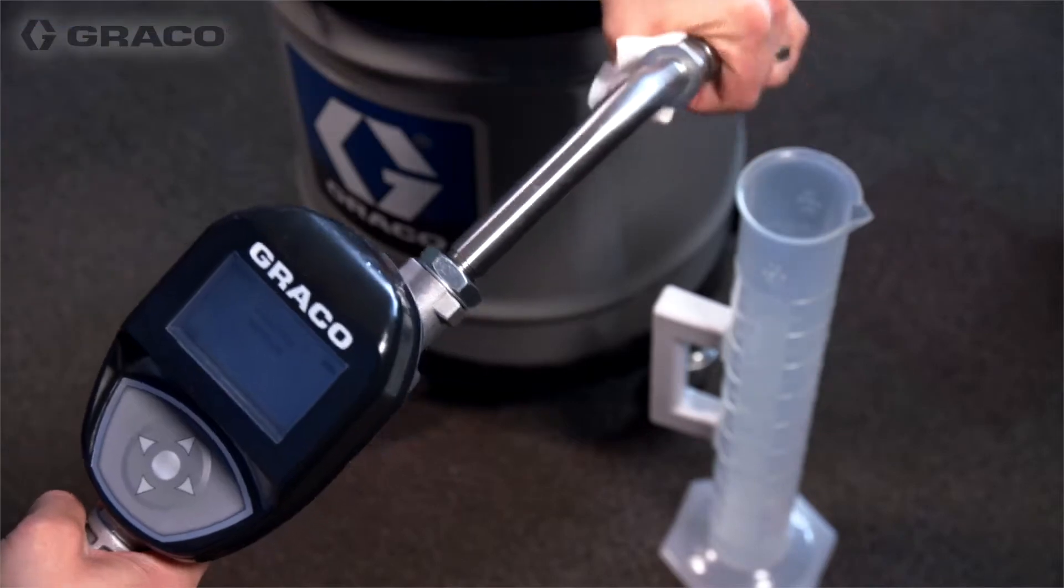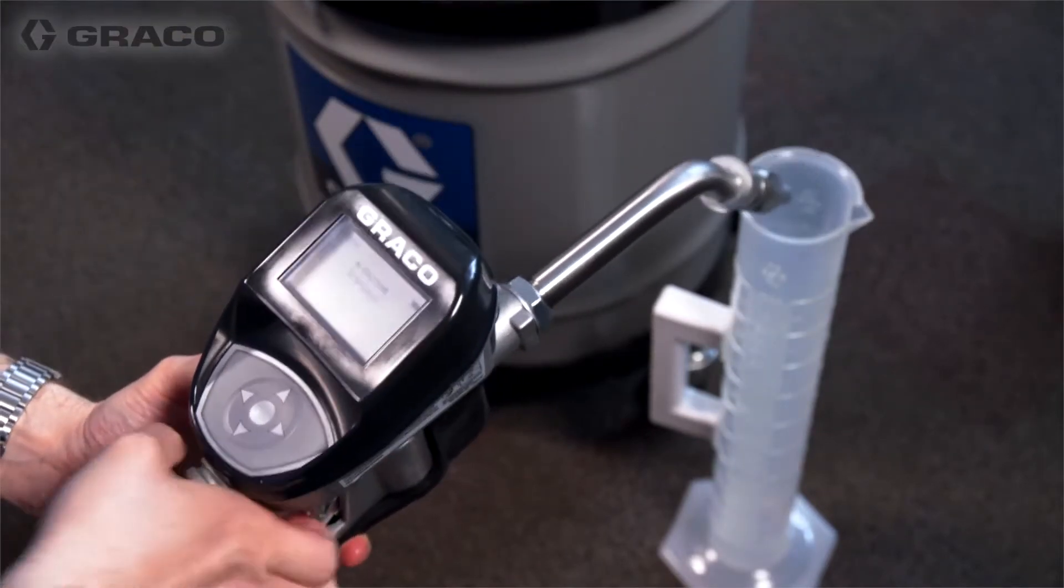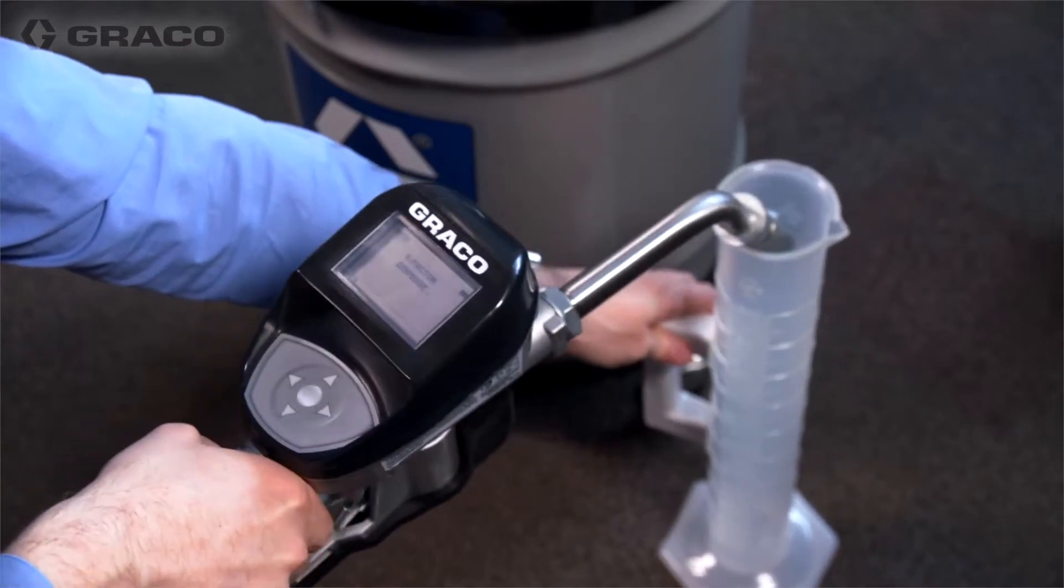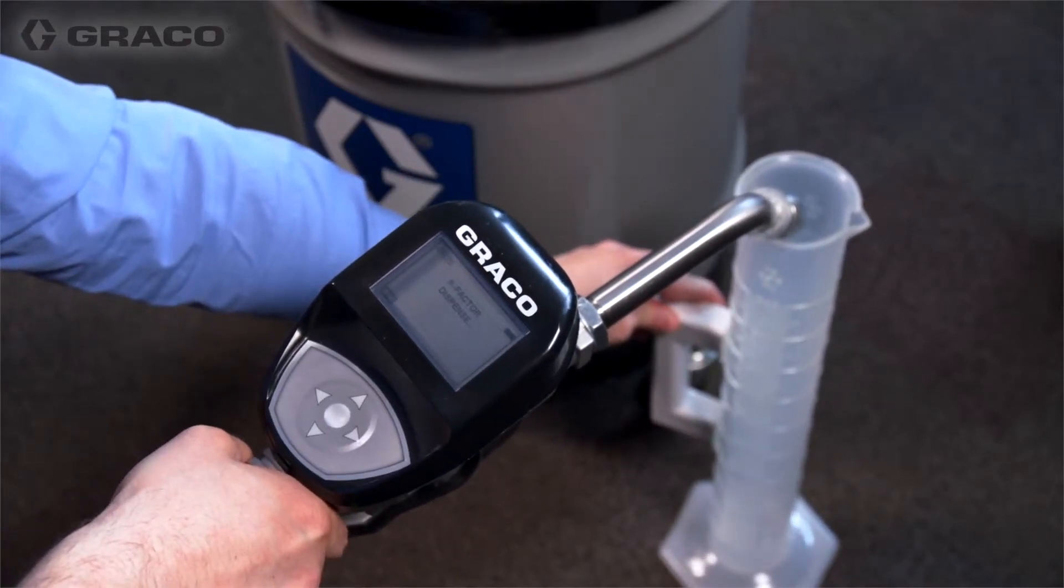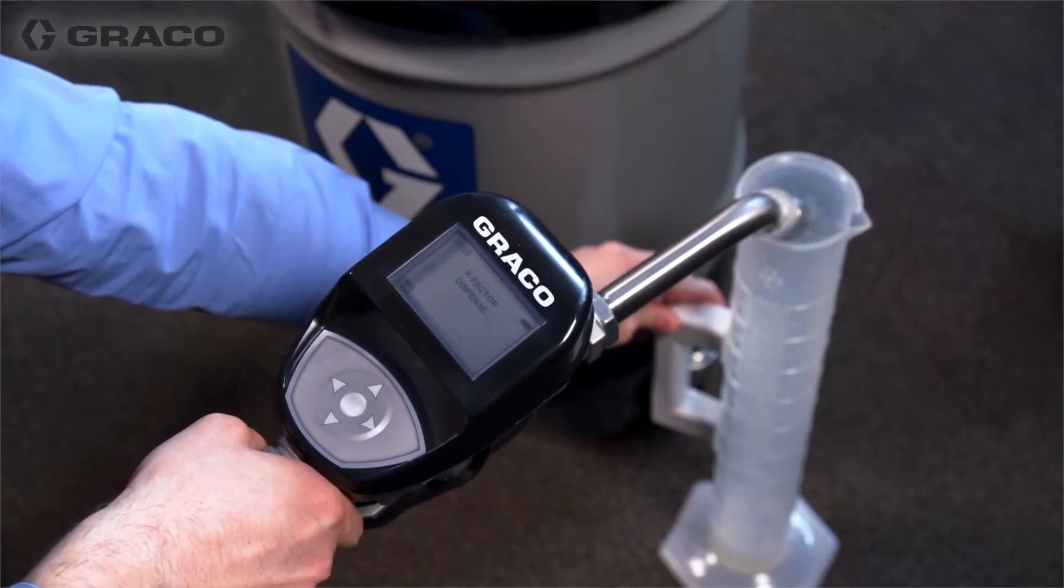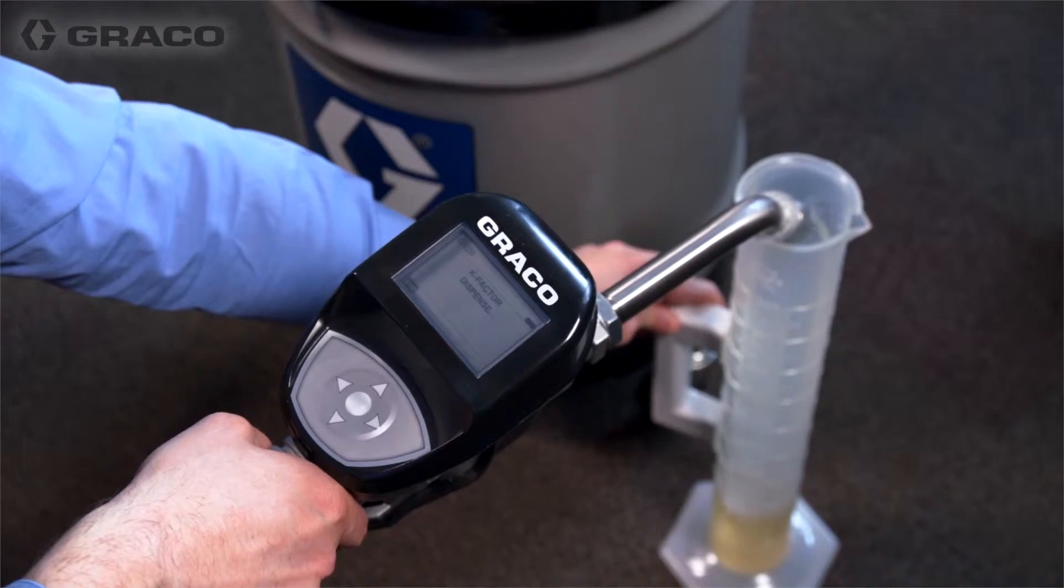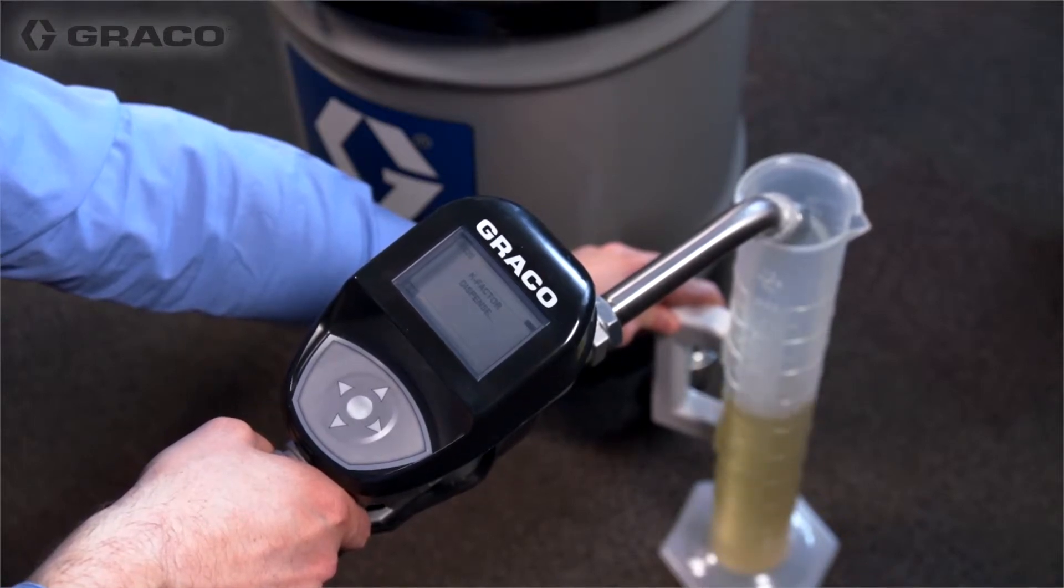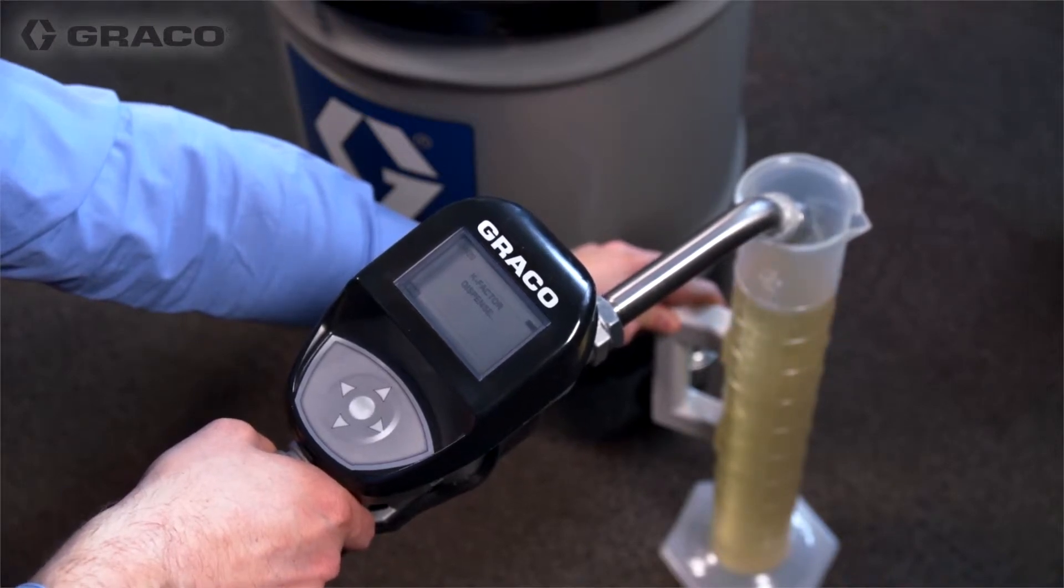Dispense exactly one quart or one liter of fluid into a one quart or one liter clean calibrated volumetric container. The units you choose depends on which units your meter is set for. Ensure you are using the same flow rate as in normal operation. Note, during the calibration dispense, the meter will not display the volume dispensed. The volume dispensed is only determined by the container measurement.